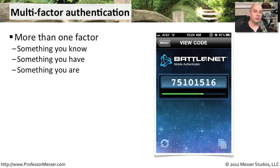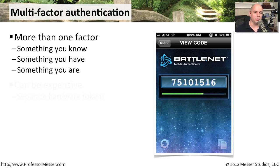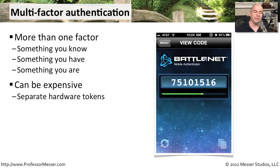Multi-factor authentication means we're using one, two, three, four, maybe five different types of information to gain access onto the network. Generally, we refer to these as something you know, like a username or a password. Maybe something you have, like a token or a token generator. Or maybe something you are — maybe we're using biometrics, a fingerprint, or a hand print to gain access to a resource.